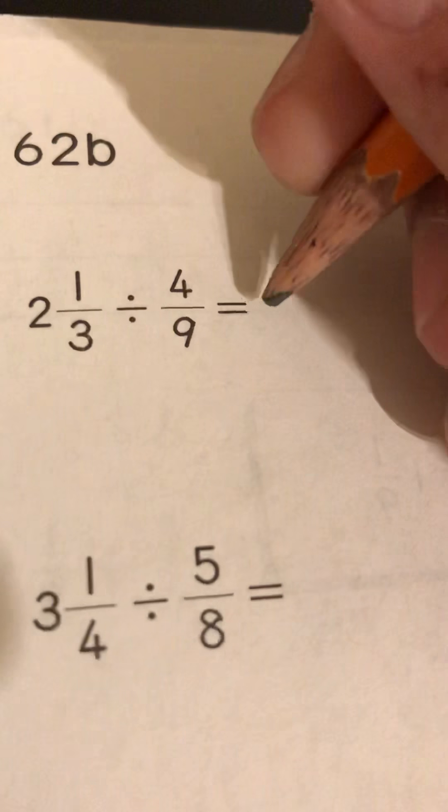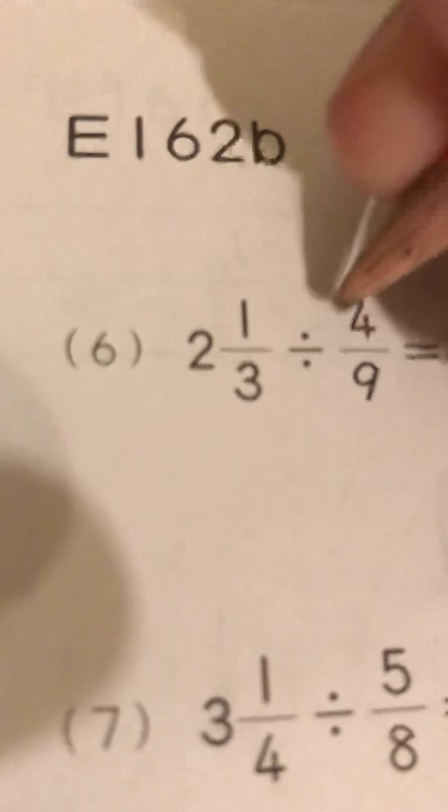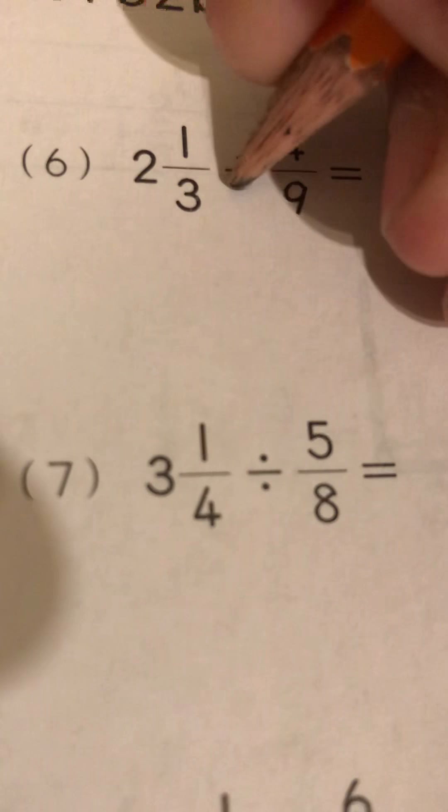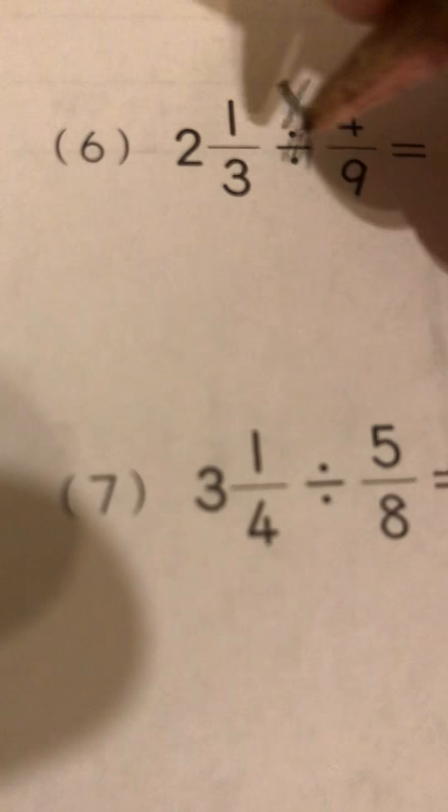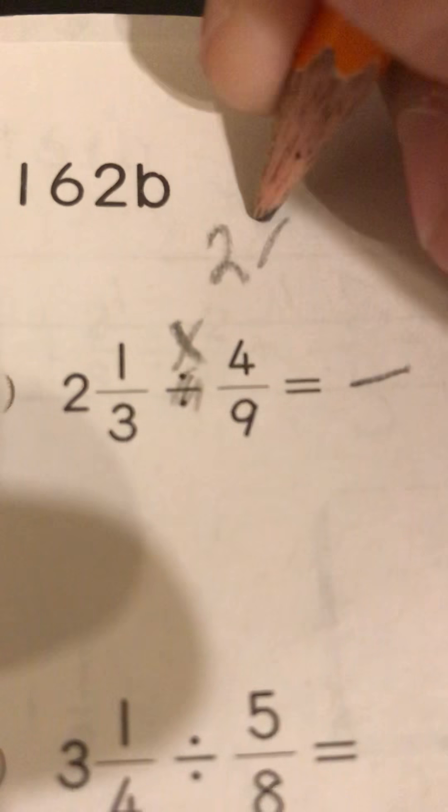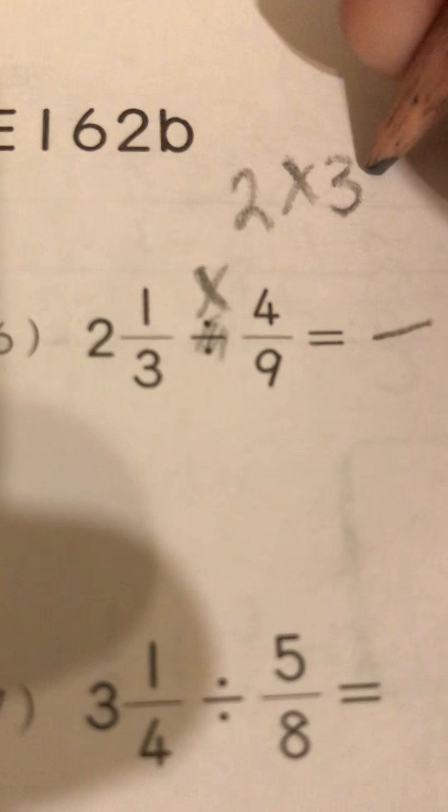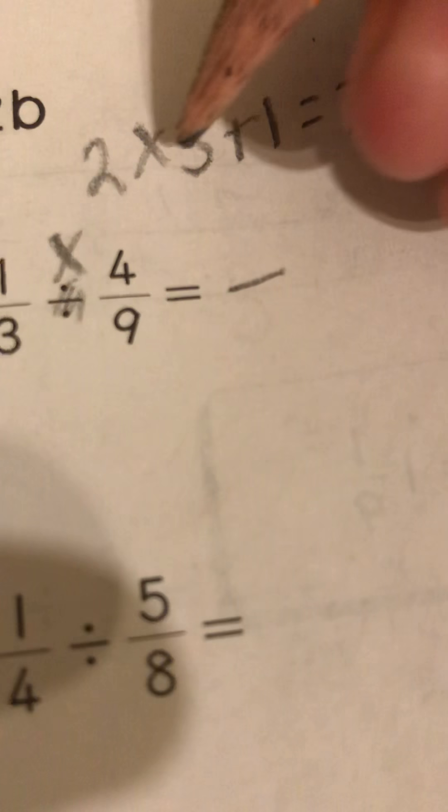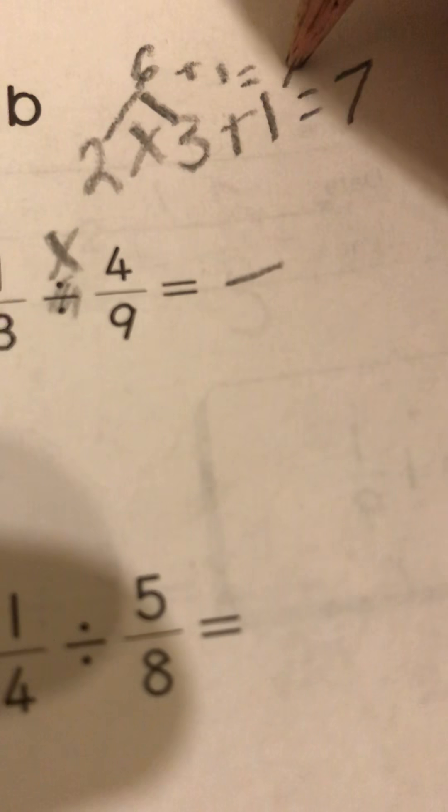Good afternoon, today we're going to be doing how to divide fractions. So first of all, I think I'll do like three problems. First of all, we're not going to divide, we're actually going to multiply. So two times three, you take the denominator and multiply it by the whole number, so two times three plus one equals seven, so six plus one is seven.